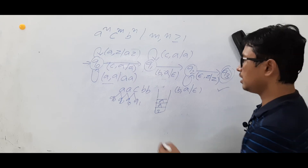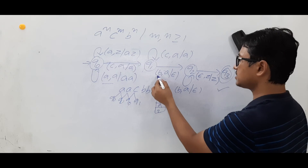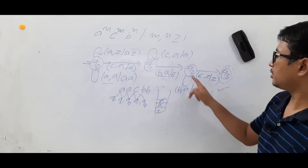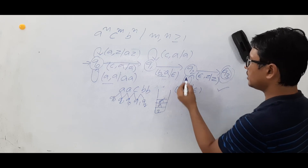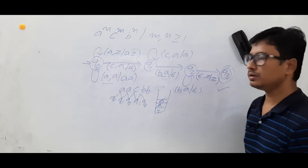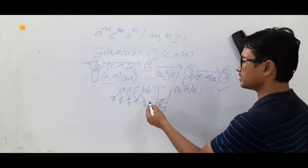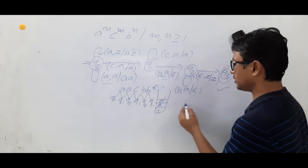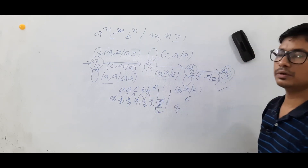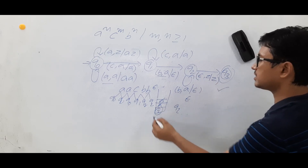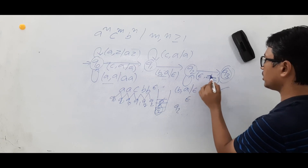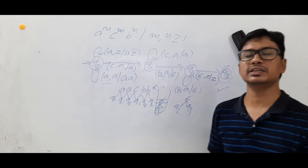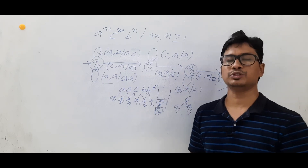Now q1 on 'b' with stack symbol 'a' — I perform the pop operation and reach state q2. In q2 on 'b' with stack symbol 'a' — I pop it, performing the pop operation for all b's, reaching q2. At last, I am in q2 on epsilon with stack symbol Z — since all a's have been popped, epsilon on Z, I keep it as Z and reach state q3, which is the final state. The string is accepted by the given pushdown automata.